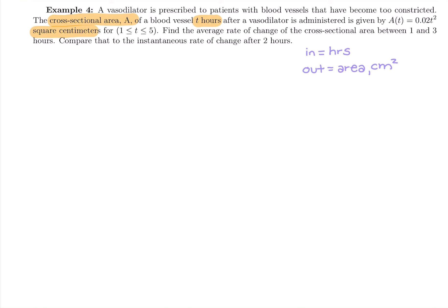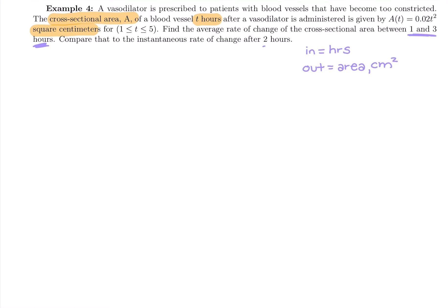So it says find the average rate of change of the cross-sectional area between one and three hours. So we want to look one and three hours after they've been given this vasodilator and compare that to the instantaneous rate of change after two hours. So another question here is, am I plugging into the original, the slope, or the derivative? Well, let's read this problem a little closer. Find the average rate of change of the cross-sectional area. Average rate of change means slope. So we're asked average change on the interval from one to three hours.